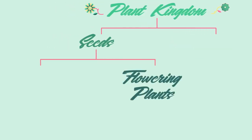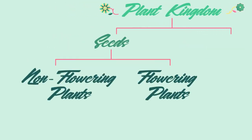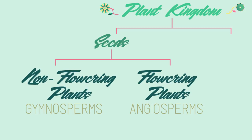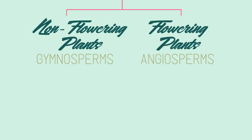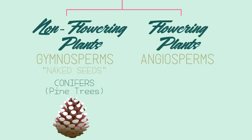Seed plants can be split into flowering plants and non-flowering plants, with scientific names of gymnosperms and angiosperms. Non-flowering plants do not produce flowers and are reproduced by means of exposed seed or ovule. Gymnosperm means naked seed — like with conifers, the cone on a pine tree is a naked seed and they do not produce flowers.